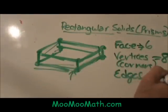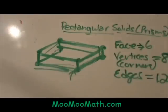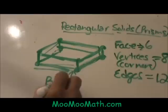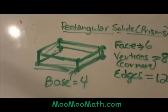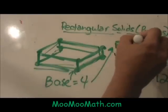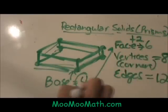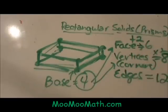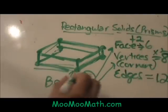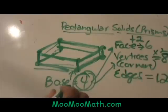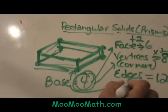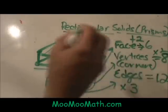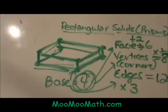So that one has twelve edges. Okay, there is a little bit of a pattern here. If your base has four sides like this one does, to find the faces you are going to add two. If you know the base has four sides you are going to multiply two by two to get the number of vertices. And if you know your base has four sides you are going to multiply by three to get the edges. So you can actually apply this to other solids besides a rectangular solid.